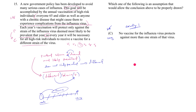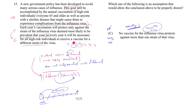Is C even necessary? No. What if a vaccine existed that protected against two different strains? That would contradict C, but the conclusion could still hold — year one protects against strain one, year two against strain two, year three against strain six, and so on. Every year still requires protection against a different strain. So C is neither sufficient nor necessary — it's a stretch to say it even strengthens the argument. It's not the right answer.